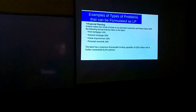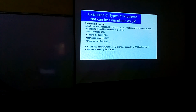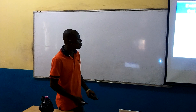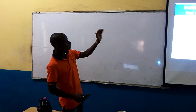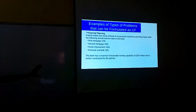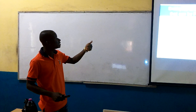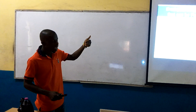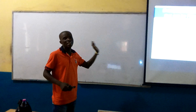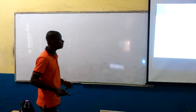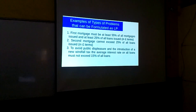The bank has a minimum foreseeable lending capability of £250 million, meaning they cannot lend beyond that. They are further constrained by the following policies. If they are supposed to give all four loans, they cannot go beyond £250 million. So let X1 be first mortgage, X2 second mortgage, X3 home improvement, and X4 personal overdraft.